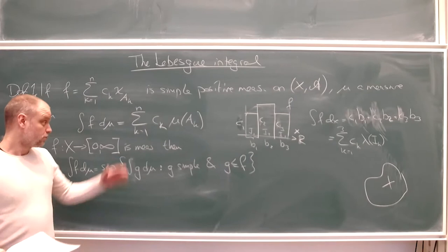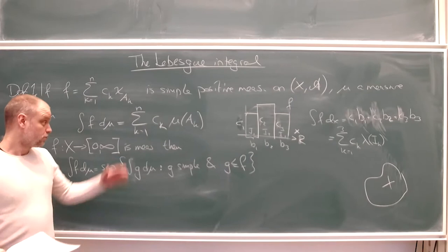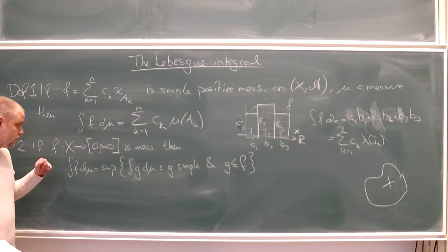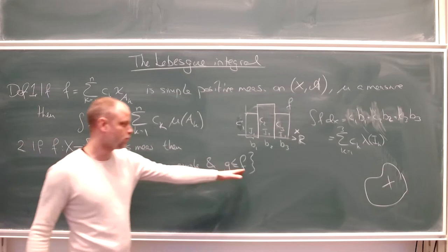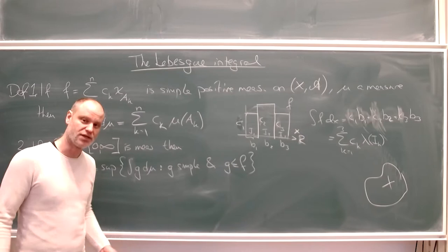To extend this construction to any measurable function f, we just take the supremum of the integrals of all simple functions which are below f. Functions we just assume to be measurable from now on, unless otherwise stated, because it gets tiresome to write everything is measurable in this course.